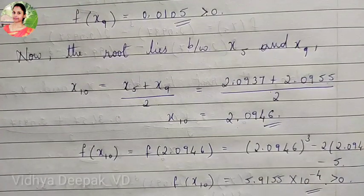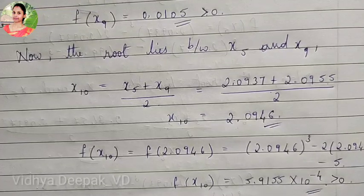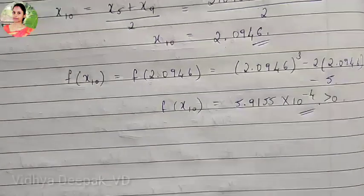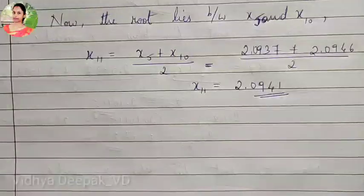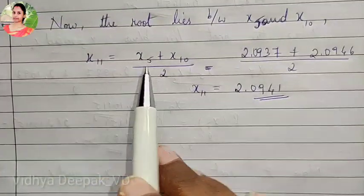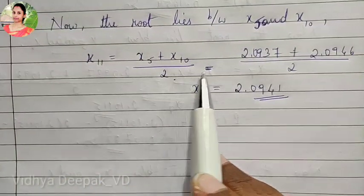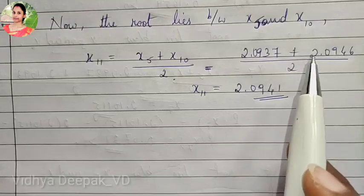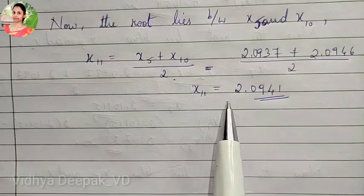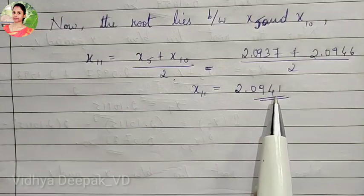The previous negative is still x5, so all values from x5 onward are positive. We find x11 using x5 plus x10 divided by 2, giving x11 equal to 2.0941.